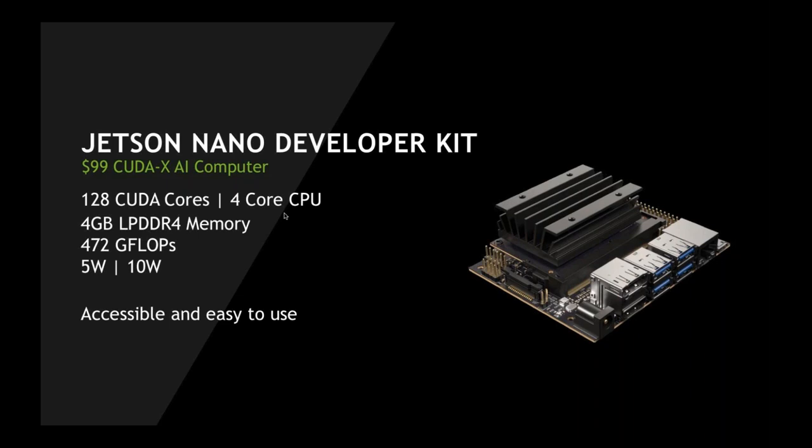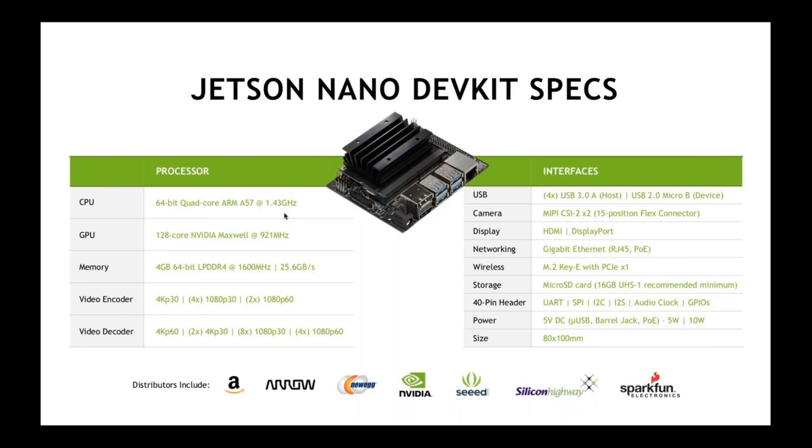The beauty of Jetson Nano is it comes with a full-blown GPU that has 128 CUDA cores. CUDA is the Compute Unified Device Architecture — the fundamental layer that talks to the NVIDIA device driver, which talks to the GPU. It uses the same layer that powers the rest of the public cloud and enterprise environments. It also comes with a four-core ARM64 CPU, 4 GB memory, and performs 472 GFLOPs per second. It's powered at either 5W or 10W, and it just costs $99. It packs a lot of punch for the price.